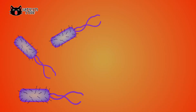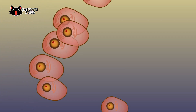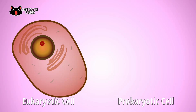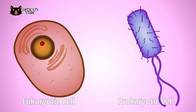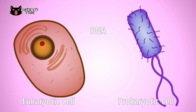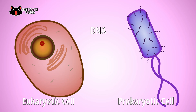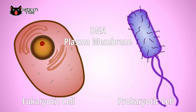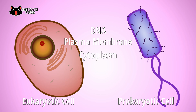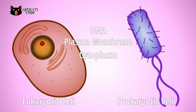Some organisms are made up of a single cell, while others are made up of millions of cells. Cells are categorized into prokaryotic and eukaryotic. Both cell types have DNA that contains the genetic code of the cell, a plasma membrane that surrounds the entire cell, cytoplasm, a gelatin-like liquid that fills the inside of the cell, and ribosomes that make proteins.